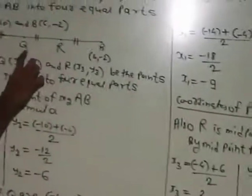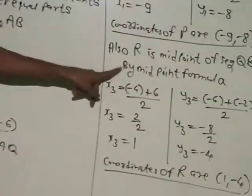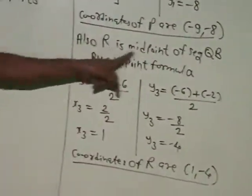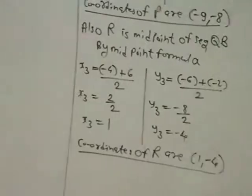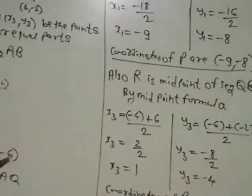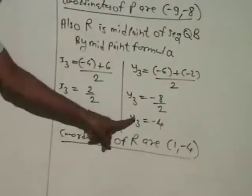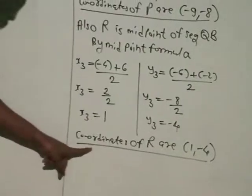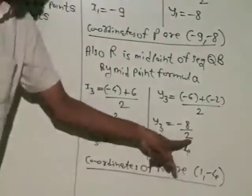R is the midpoint of segment QB. Again by midpoint formula: x₃ = (-4 + 6)/2 = 2/2 = 1, and y₃ = (-6 + (-2))/2 = -8/2 = -4. Coordinates of R are (1, -4).